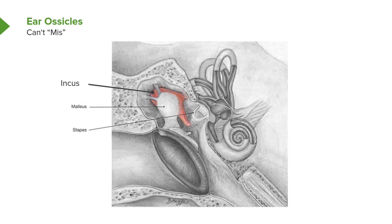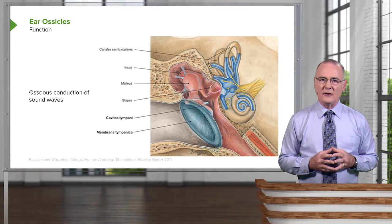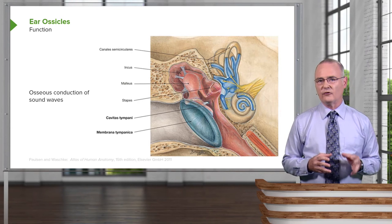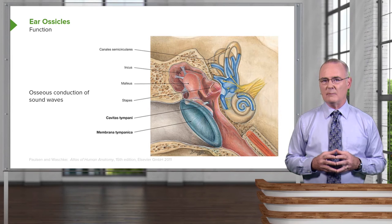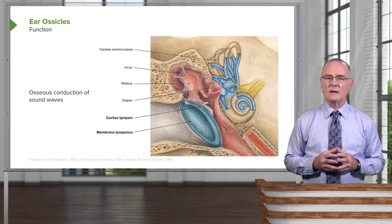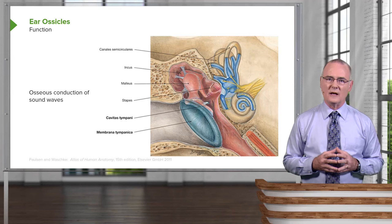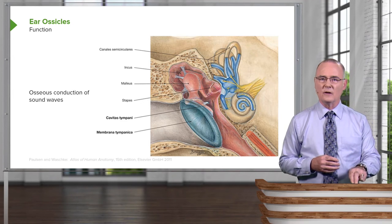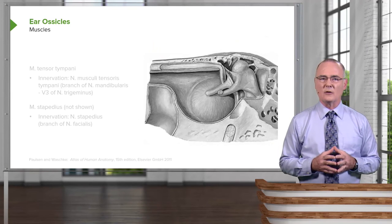The I in MIS is the incus, now seen shaded. The final structure is the stapes, which resembles a stirrup, also shown shaded. The purpose of these ear ossicles is the osseous conduction of sound waves. When those sound waves strike the tympanic membrane, it starts to vibrate, causing the ear ossicles to vibrate as well. That vibration is conducted to the oval window and then into the cochlear apparatus.